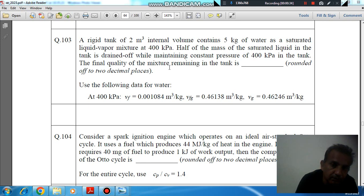The final quality of the mixture remaining in the tank is dashed, rounded off to 2 decimal places. We will use the following data for water. At 400 kPa, specific volume of fluid VF is 0.001084 meter cube per kg, VFG is equal to 0.46138 meter cube per kg.